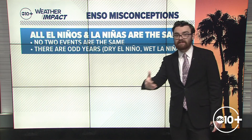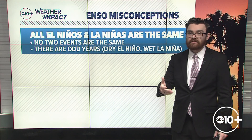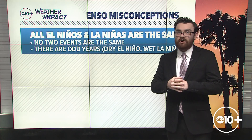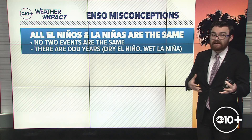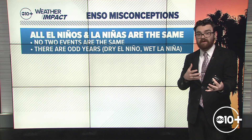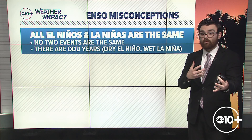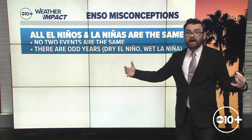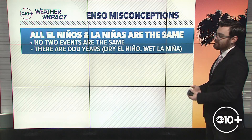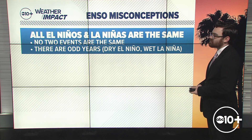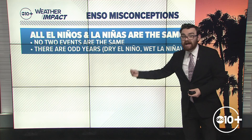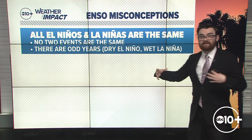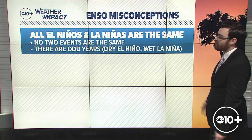The Pacific North American pattern, or PNA, operates on a daily to weekly timescale, whereas the ENSO — the El Niño Southern Oscillation — is on a scale of about 18 months. So the PNA changes rapidly, which is why it has a much more direct impact on our weather, whereas El Niño and La Niña operate on a scale of about a year and a half and don't impact our weather directly — they just influence the overall pattern.